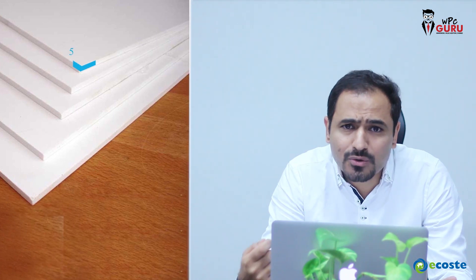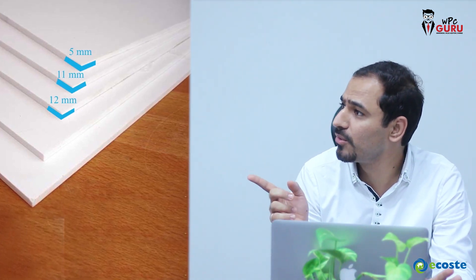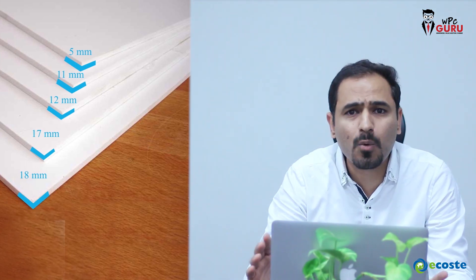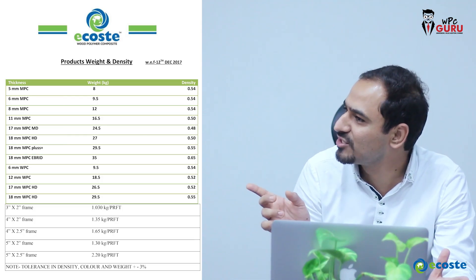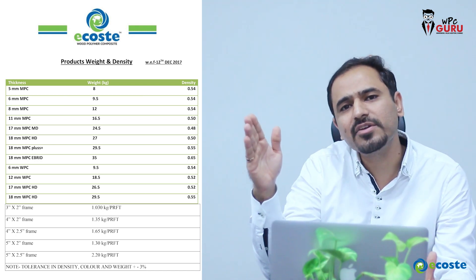Now, regarding manufacturing specifications — we produce almost all thicknesses that the industry and consumers need. On screen you can see the different thicknesses we manufacture. There is also a density chart showing what density corresponds to each dimension. These two charts should make your buying decision easier in terms of knowing what's available.